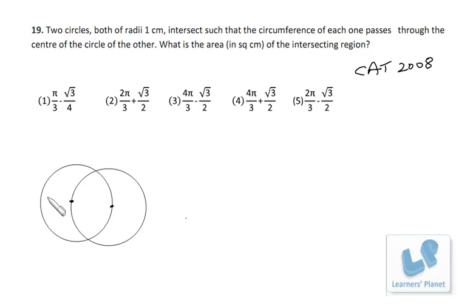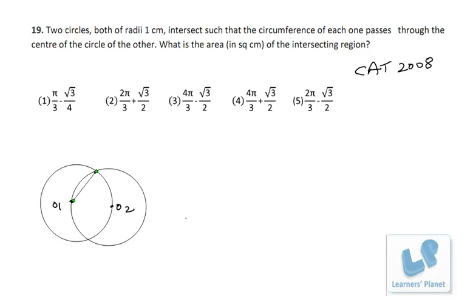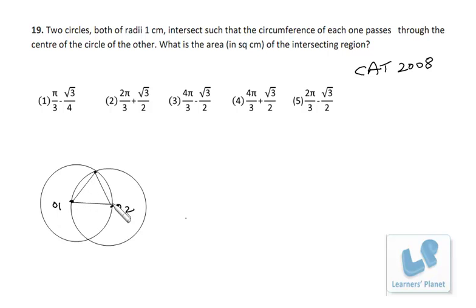Both circles have the same radius of 1 centimeter. This is the center of the first circle, O1, and this is the center of the second circle, O2. The radius from O1 to the intersection point is 1 centimeter, from O2 is also 1 centimeter, and the distance O1 to O2 is also 1 centimeter. This means we have an equilateral triangle.